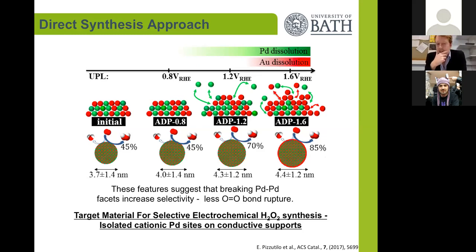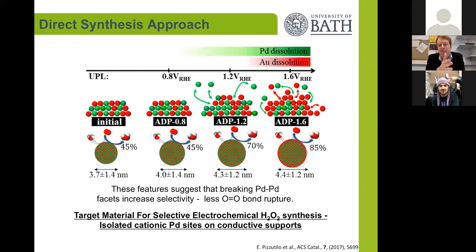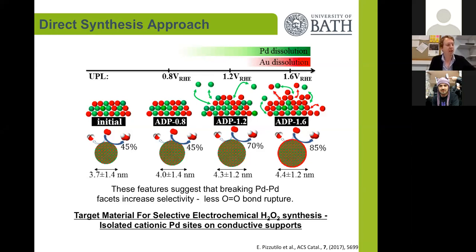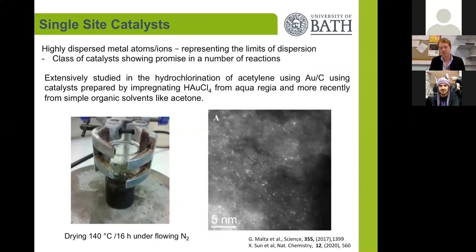This suggested that having isolated or low-nuclearity palladium in the surface of these particles would be selective catalysts for hydrogen peroxide synthesis. This supports what we saw with the gold-palladium on carbon system published in 2009, and also with the palladium-tin and palladium-nickel systems reported in 2016. So we decided to try and prove this hypothesis and move on to a model system: a single-site palladium catalyst.